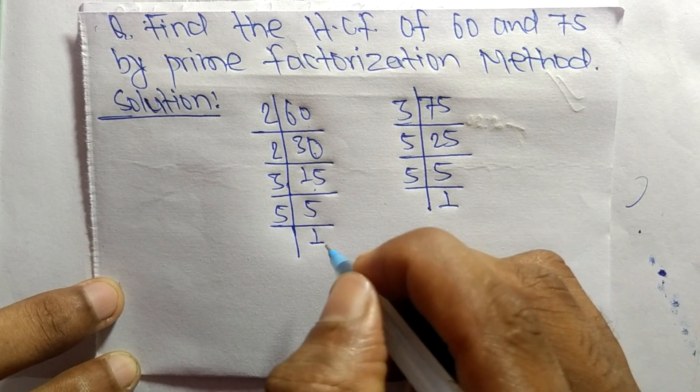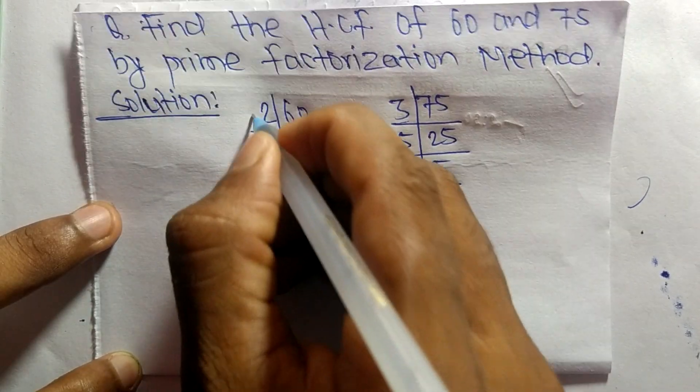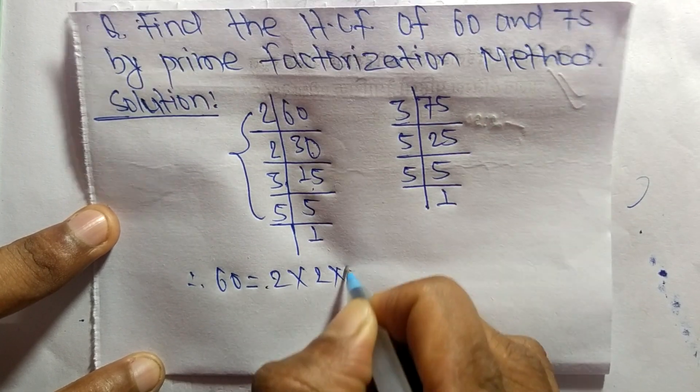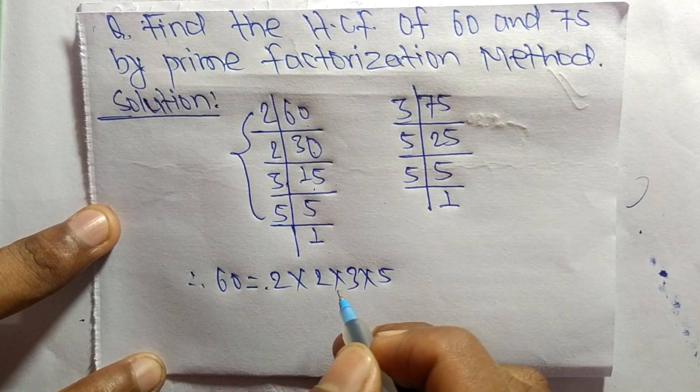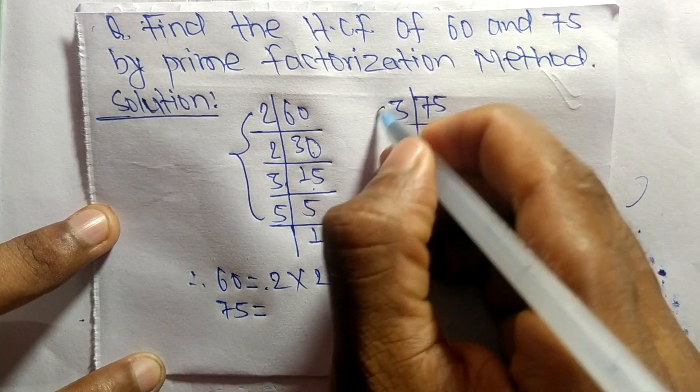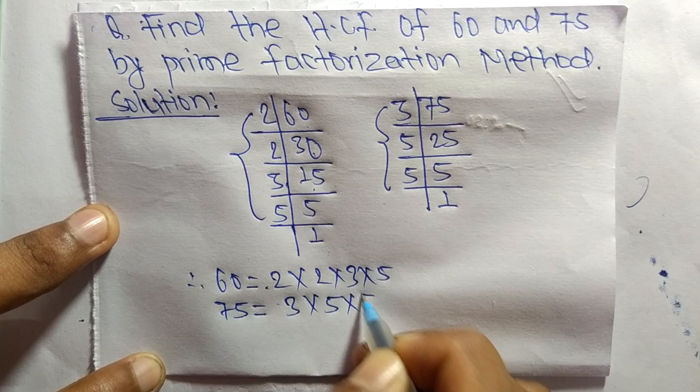So from these prime factors we can write 60 is equal to 2 times 2 times 3 times 5. Likewise, 75 is equal to 3 times 5 times 5.